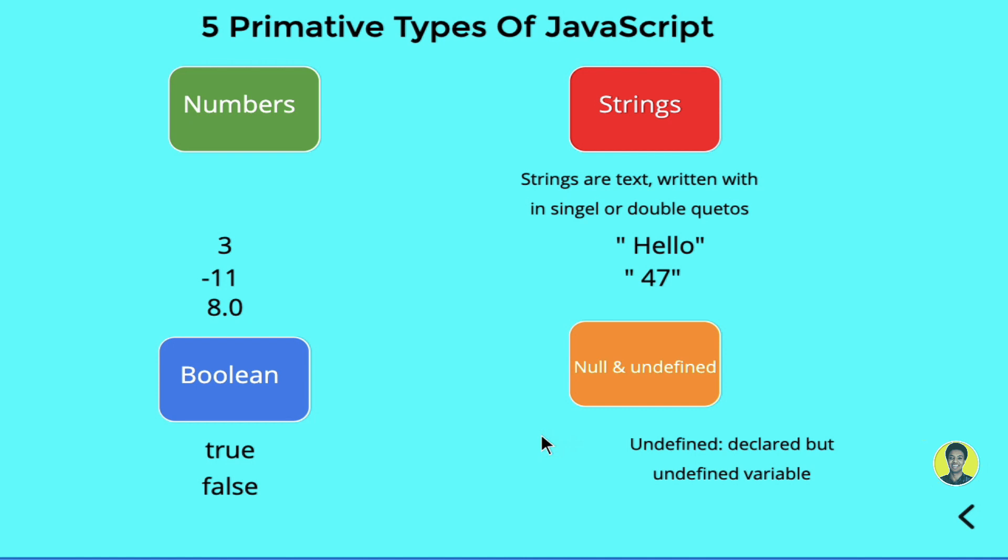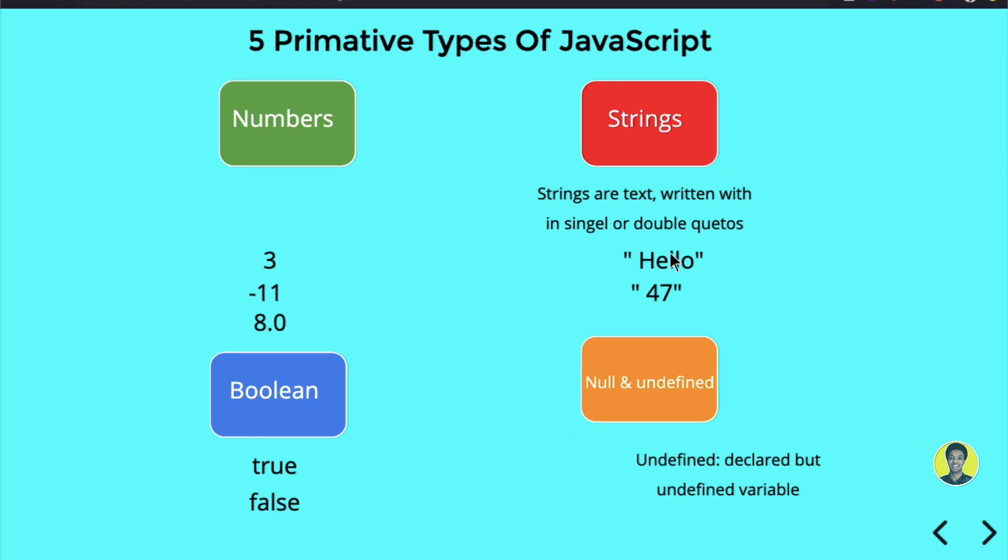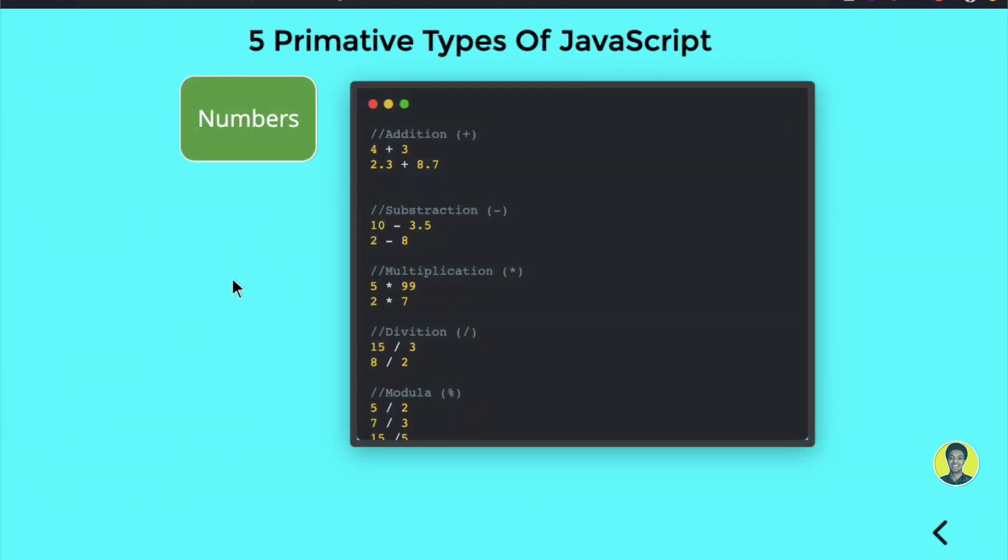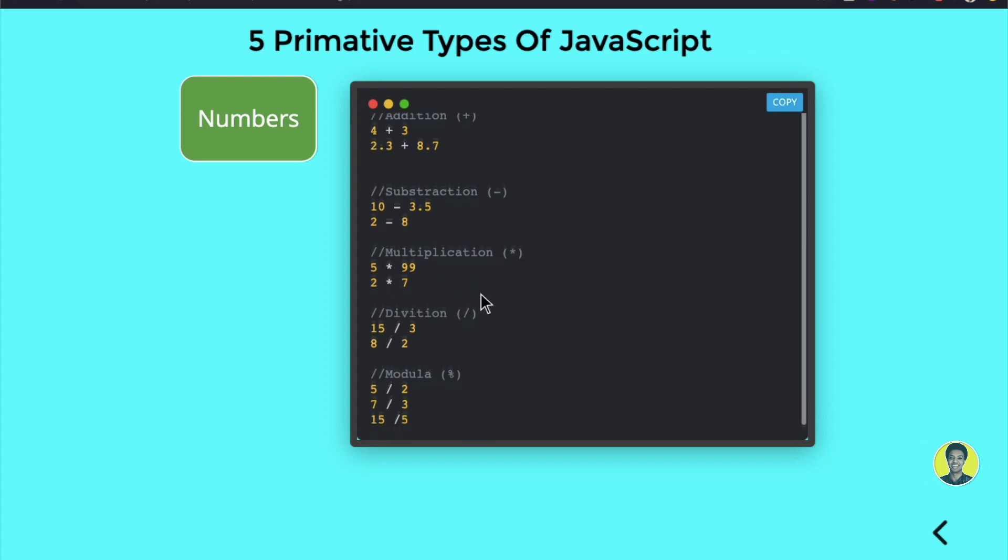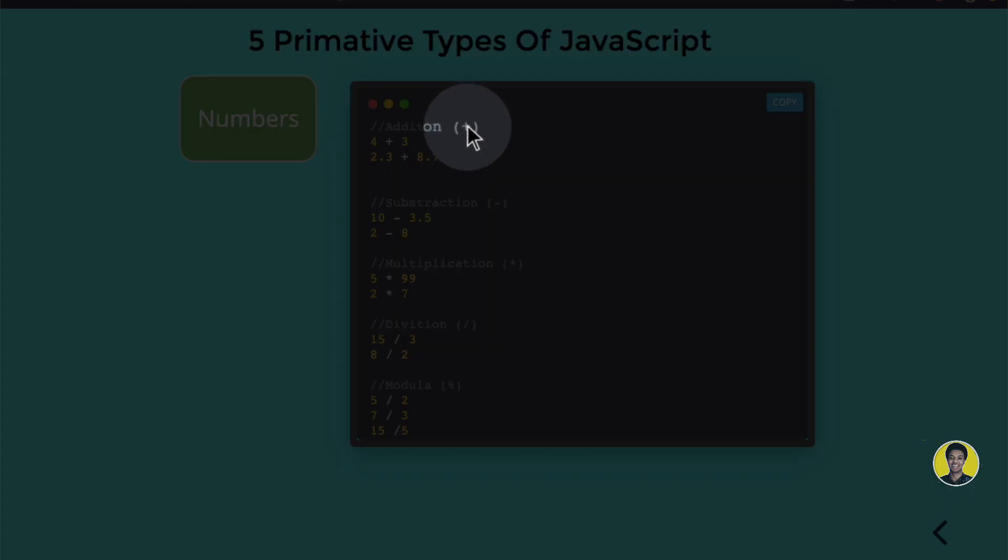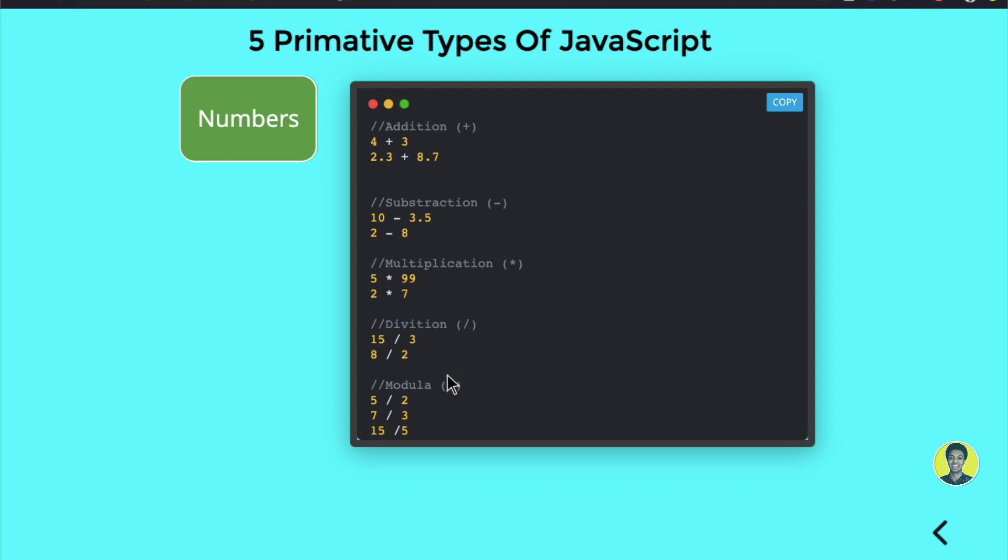Now let's look at practical examples and see how these work. First, let's look at numbers. JavaScript uses standard mathematical operations for calculations like addition, subtraction, multiplication, and division. It uses the same symbols we use in regular math.